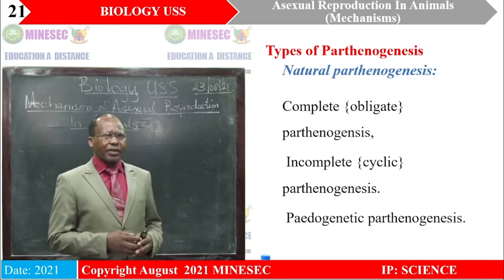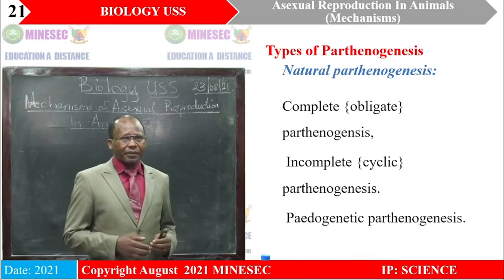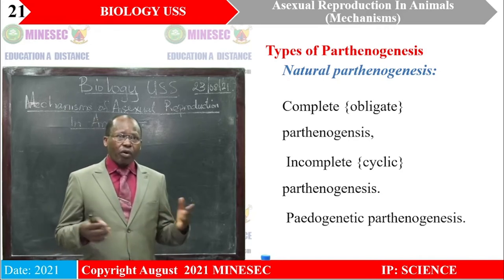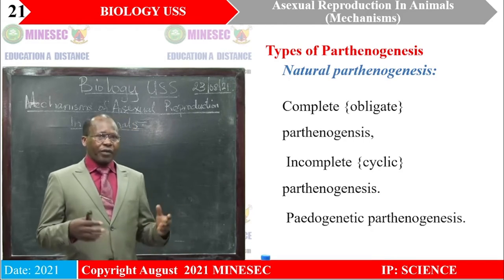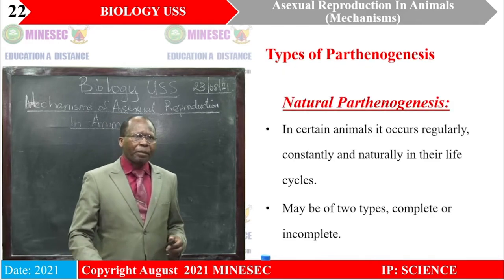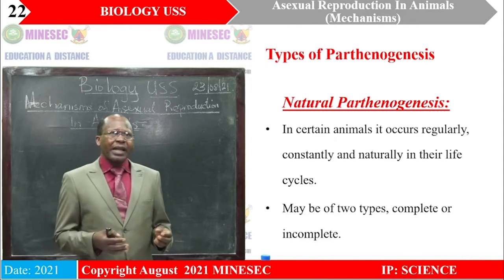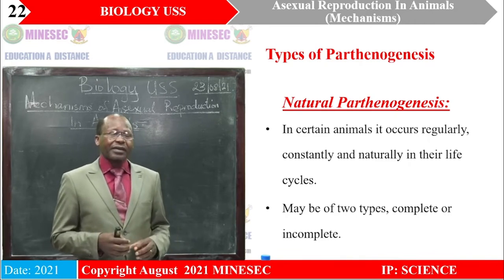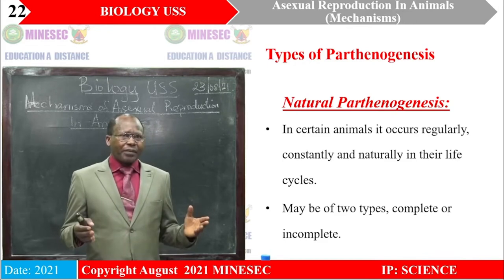Let's look at the types of parthenogenesis, because this will help us explain what goes on in this special species of lizards. For parthenogenesis, we can have natural parthenogenesis — and for this natural type, it could be complete, what we call obligate parthenogenesis, or it could be incomplete, or of course cyclic parthenogenesis. We could also have artificial parthenogenesis. In the situation of natural parthenogenesis, certain animals live in their specific natural habitats where conditions permit them to carry out this process. There may be two types: complete or incomplete.